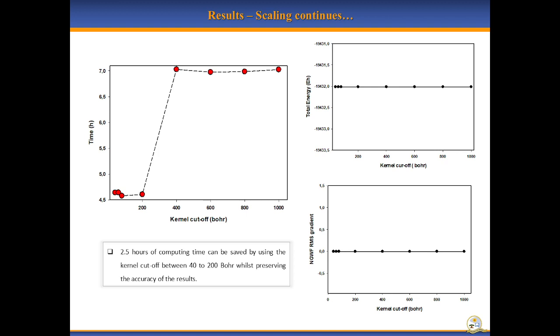Here we check the effect of kernel cutoff on the accuracy of the results, given that true linear scaling can only be observed through truncation of the density kernel. The results here show that significant computational time can be saved by using a kernel cutoff between 40 and 204 while preserving the accuracy of the results.